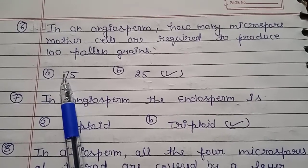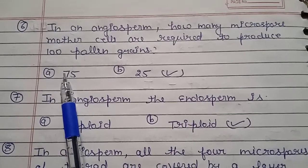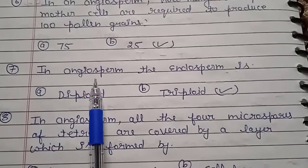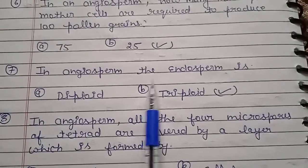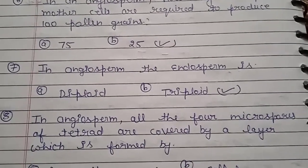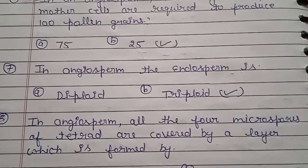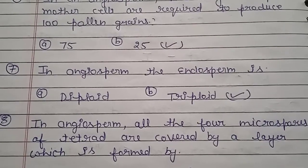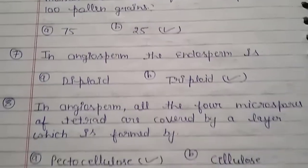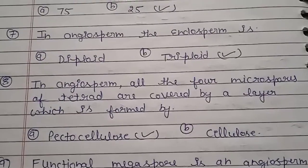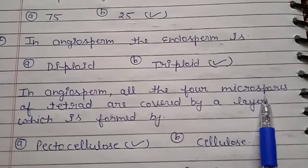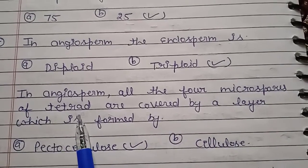Question number 7: in angiosperm, the endosperm is in which phase? In angiosperm the endosperm is in triploid phase, so the answer is triploid.